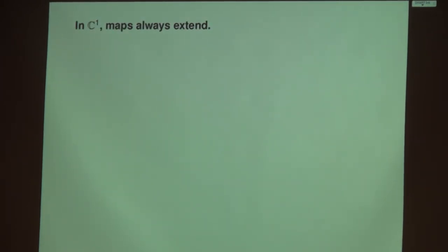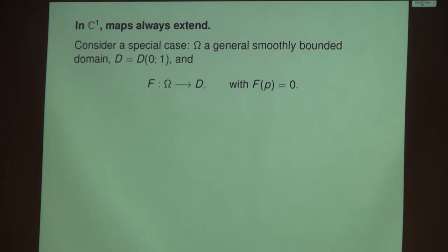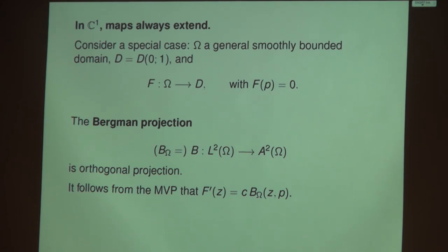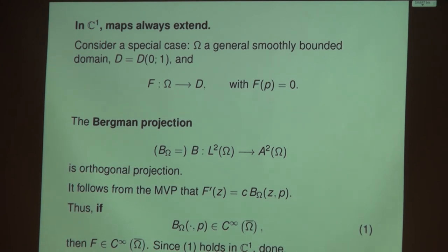In the spirit of warming up: in one dimension, maps always extend under smoothness and boundedness. If you have a smoothly bounded domain omega mapped to the disk by a biholomorphism, look at the point in omega that maps to zero. Using the Bergman projection — orthogonal projection from L2 onto its holomorphic subspace — and essentially the mean value theorem, you see that the derivative of the conformal map is a constant times the Bergman kernel with the second variable based at P. So if that Bergman kernel is smooth up to the boundary, then F-prime is, and so F is, and you're done.